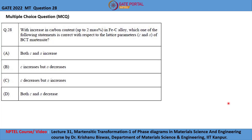Let me study the 28th question of GATE 2022, which is an MCQ: with increase in carbon content up to 2 mass percentage in iron-carbon alloy, which one of the following statements is correct with respect to the lattice parameters C and A of the BCT martensite, where BCT is body-centered tetragonal? Option A: both C and A increase. Option B: C increases but A decreases. Option C: C decreases but A increases. Option D: both C and A decrease.